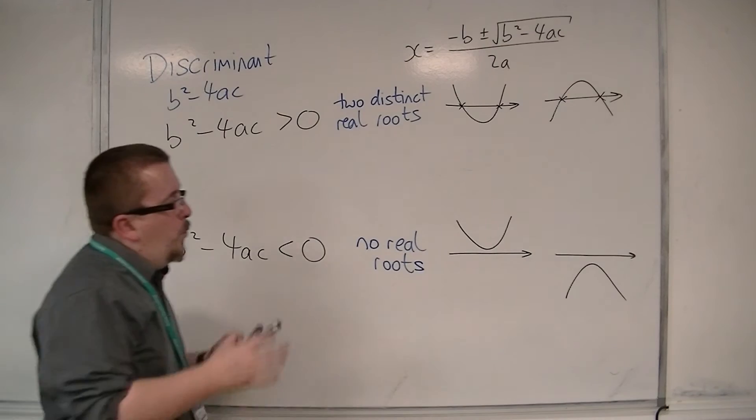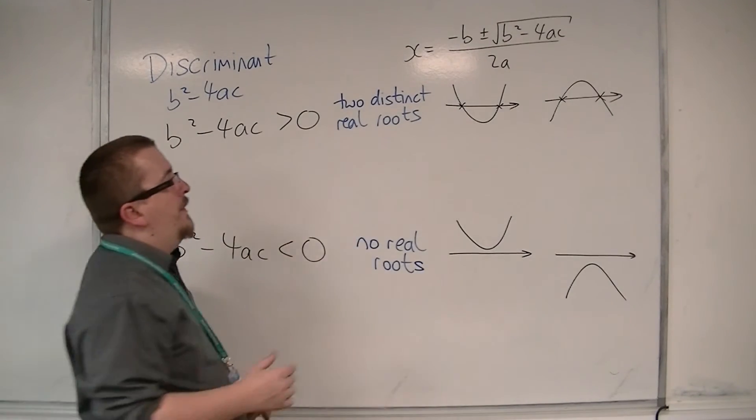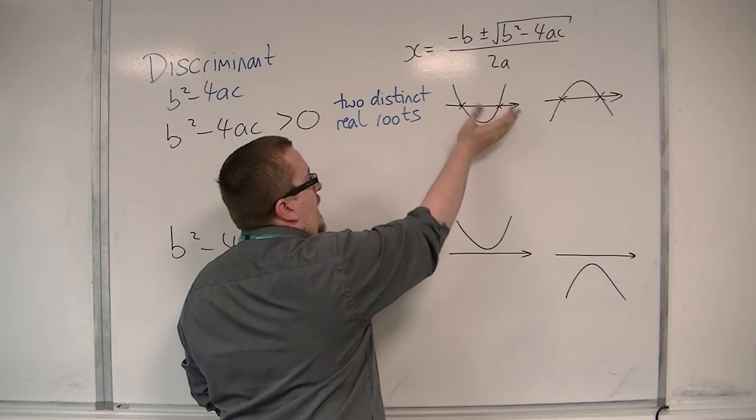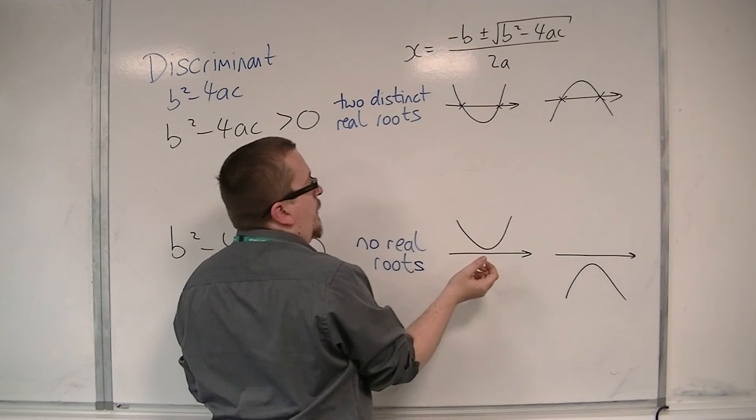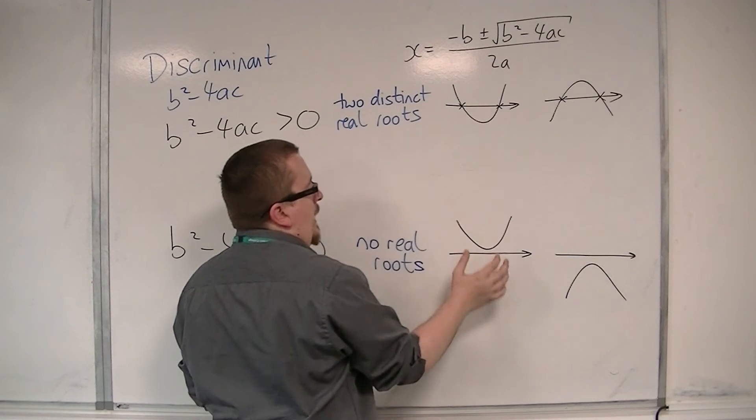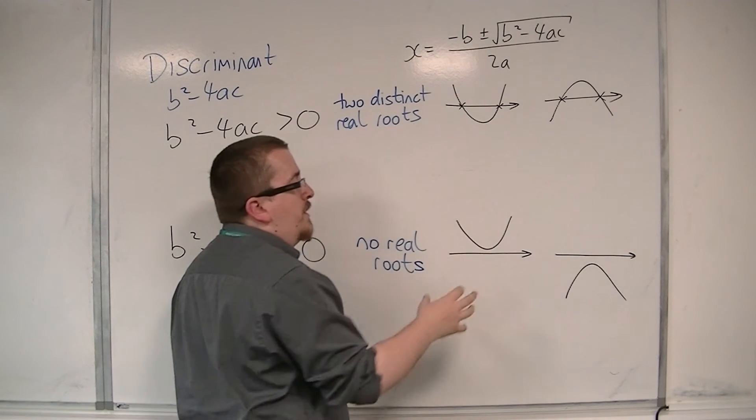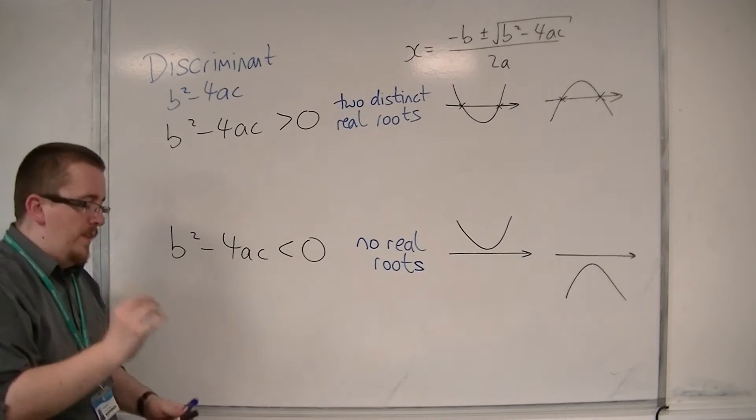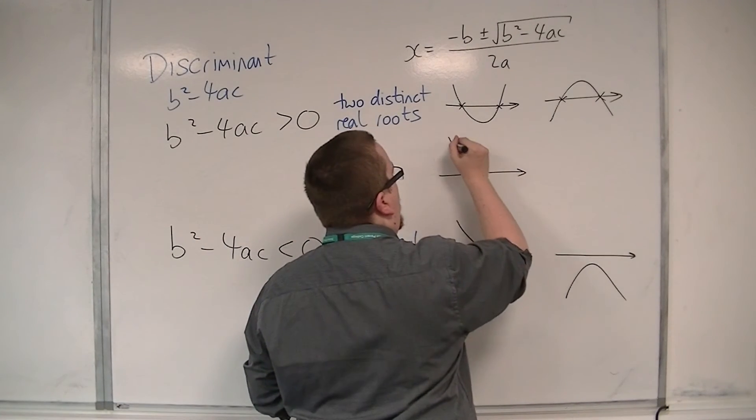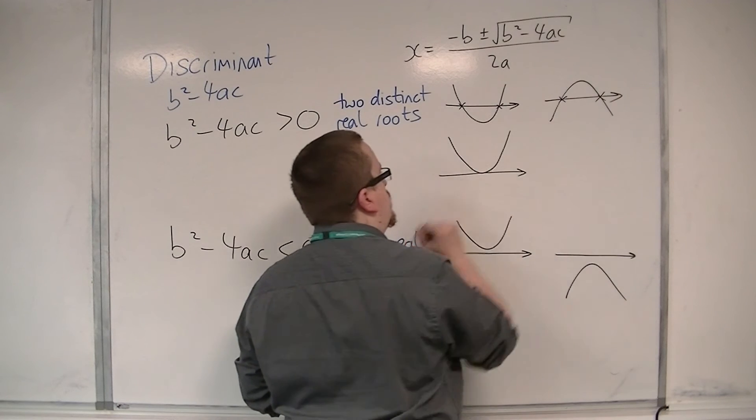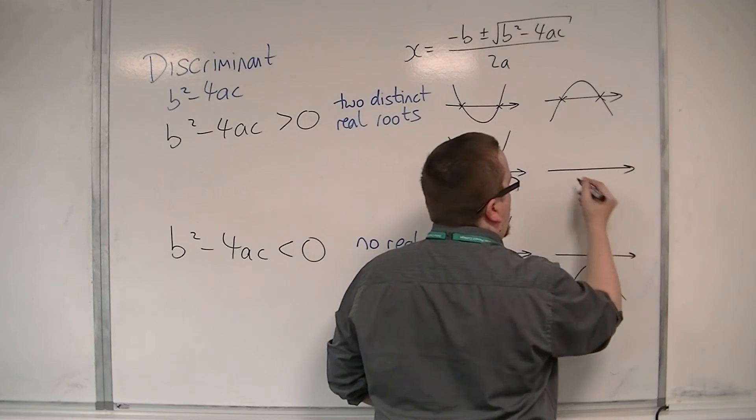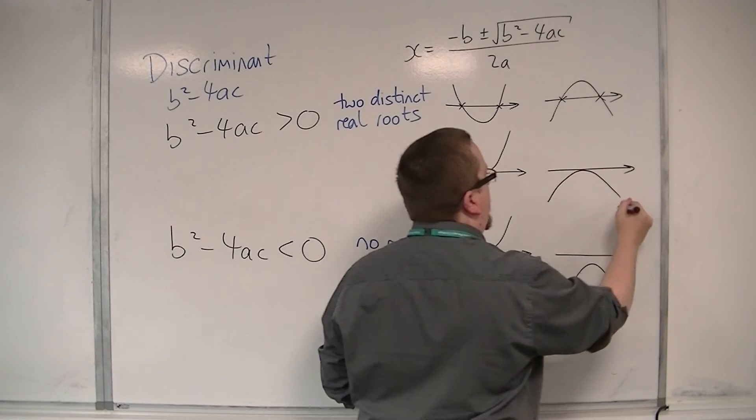So what about if you could imagine that this curve is approaching the x-axis and moving upwards, at some point between here and here, that curve will touch the x-axis at one point. There will be a point where the curve will just brush the x-axis like that. Or in this image, just brush the x-axis like this.